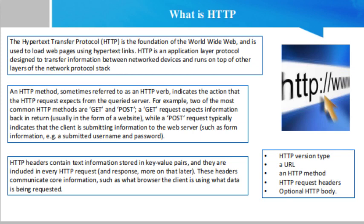Now, what is an HTTP status code? HTTP status codes are three-digit codes most often used to indicate whether an HTTP request has been successfully completed. Status codes are broken into blocks: 1XX informational, 2XX success, 3XX redirection, 4XX client error, and 5XX server error. The XX refers to different numbers between 00 and 99.